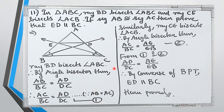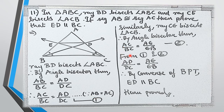Similarly, ray CE is the angle bisector of angle ACB. By the angle bisector theorem, AC upon CB equals AE upon EB. So AC upon BC equals AE upon EB. This is our second equation.